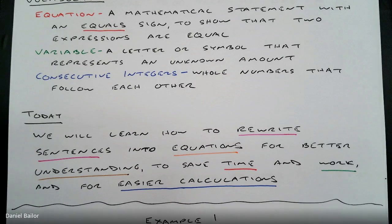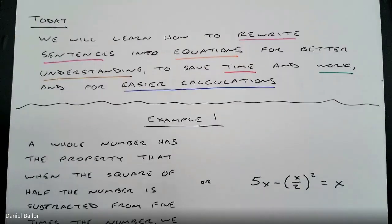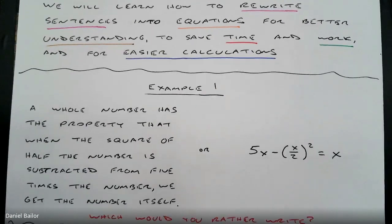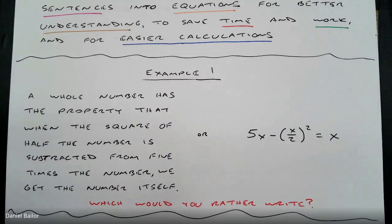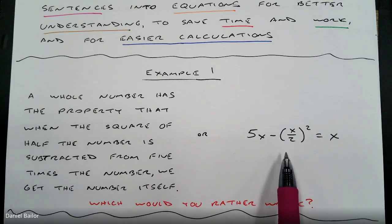This is really like a translation. Today we're going to practice translating from English into math language, and math is a language. Just to prove that equations make life easier than sentences in math: Example 1 says 'a whole number has the property that when the square of half the number is subtracted from five times the number, we get the number itself.' That's English. The math version is a much shorter equation.